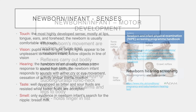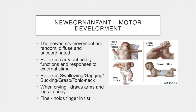The newborn's movements are random, diffuse and uncoordinated. Reflexes carry out bodily functions and responses to external stimuli. These reflexes include swallowing, gagging, sucking, grasp and tonic neck. When crying, the newborn draws their arms and legs to the body. Fine motor skills are very limited. The newborn can hold a finger in their fist, called the palmar reflex. Biologists have found that the palmar reflex is significantly more frequent in infants of fur-carrying primate species, theorising the grasping reflex evolved as essential for young carried in fur. Although non-essential in humans, it does set up the development of the pincer grasp, which is essential to fine motor development.